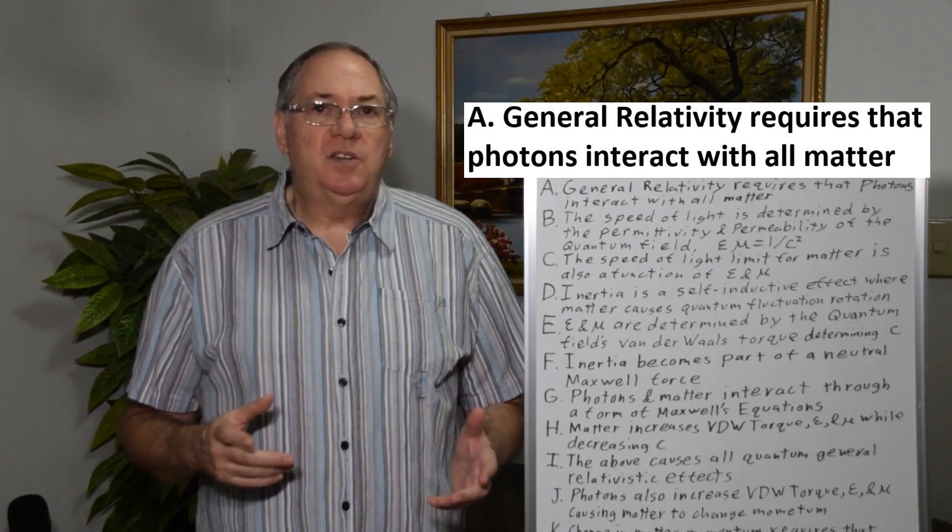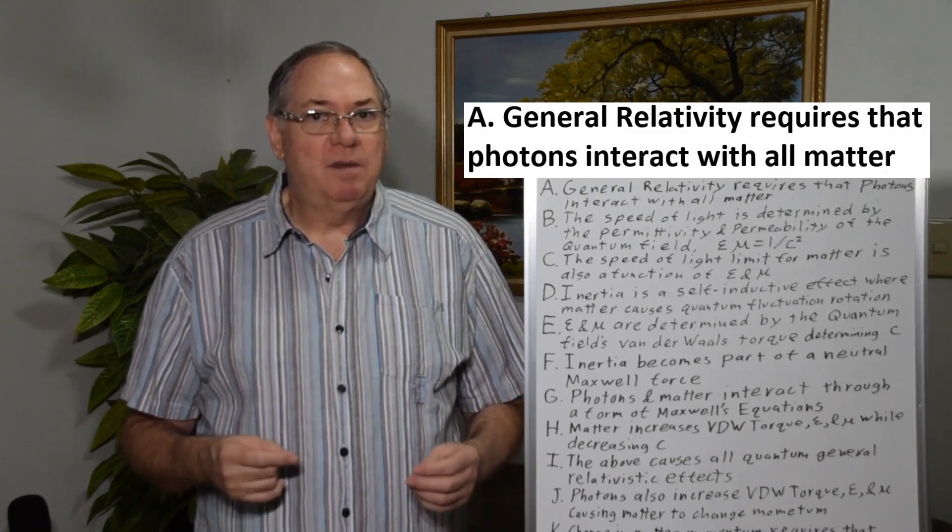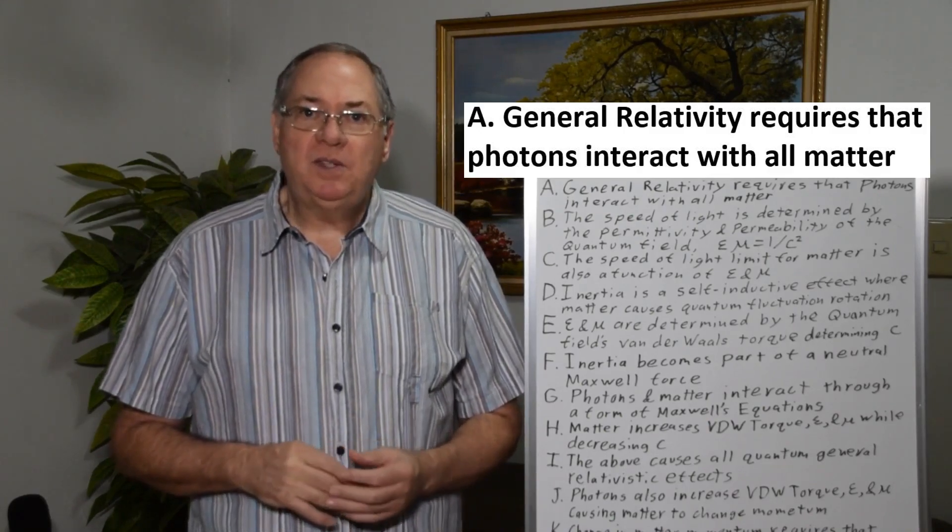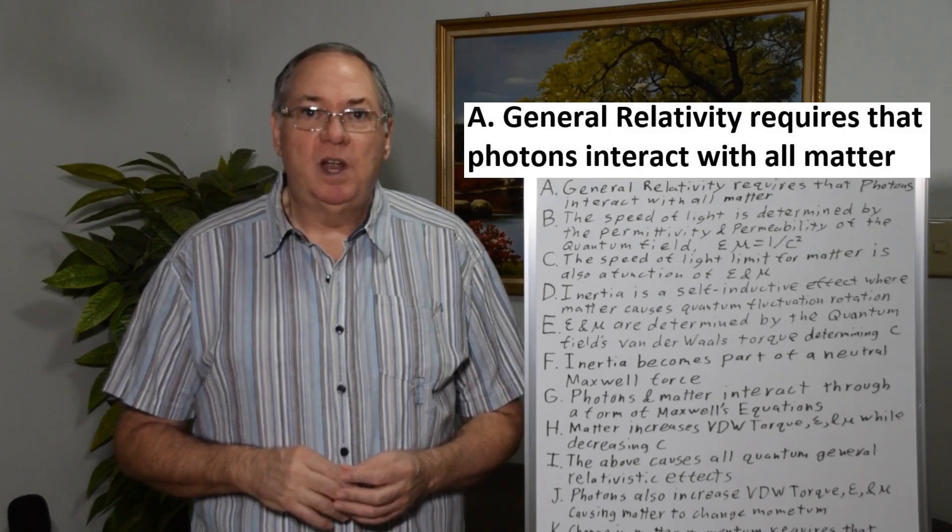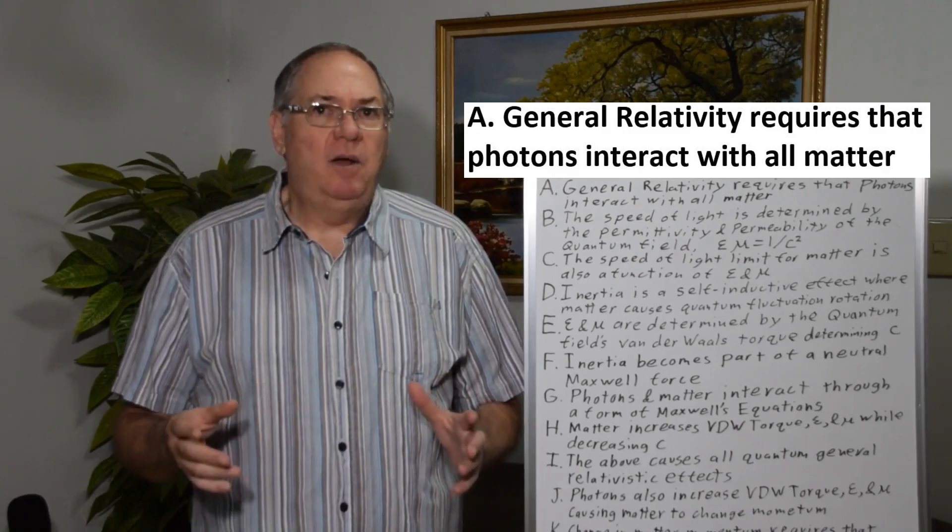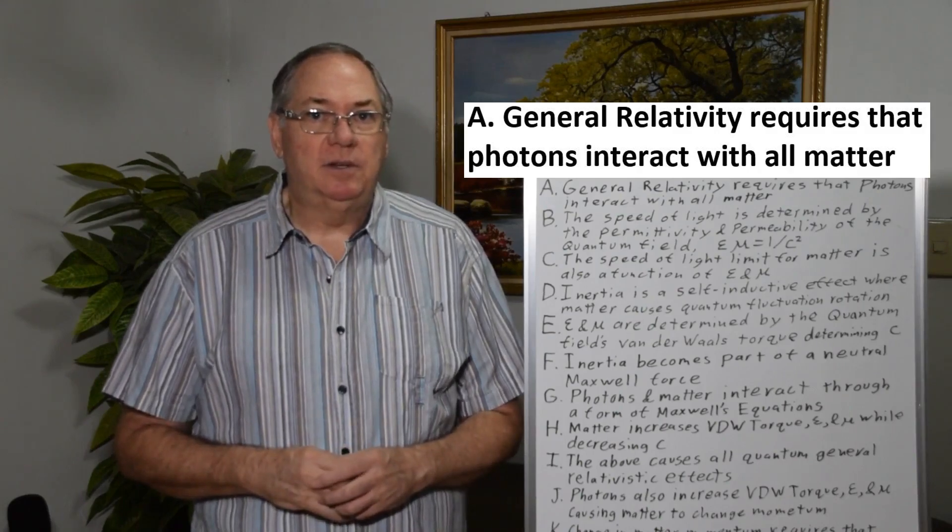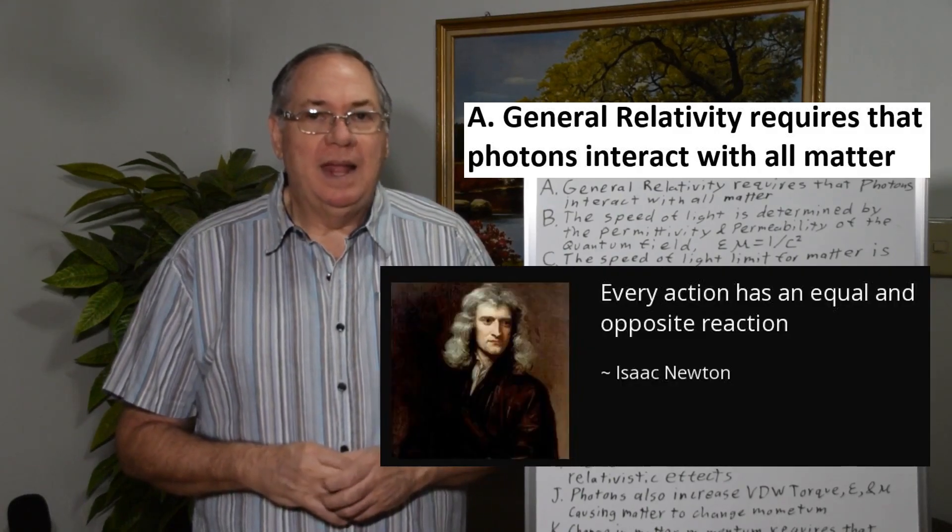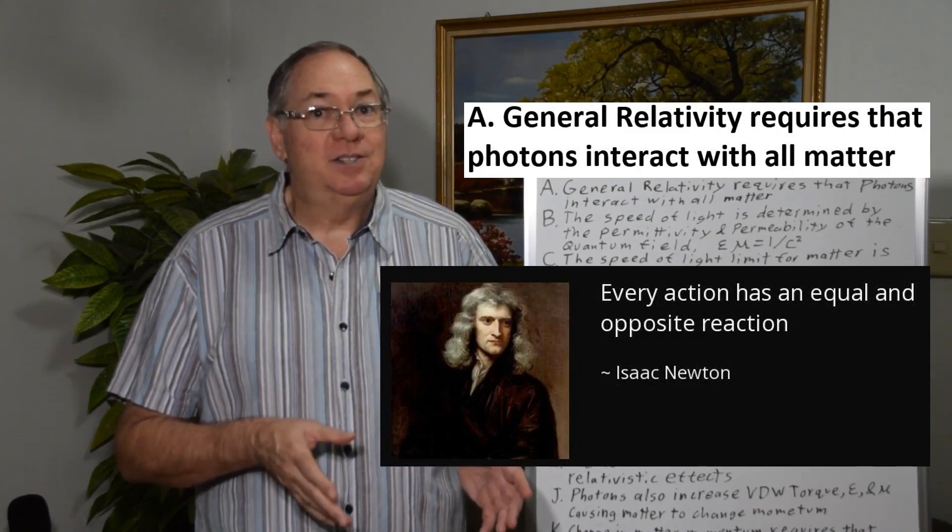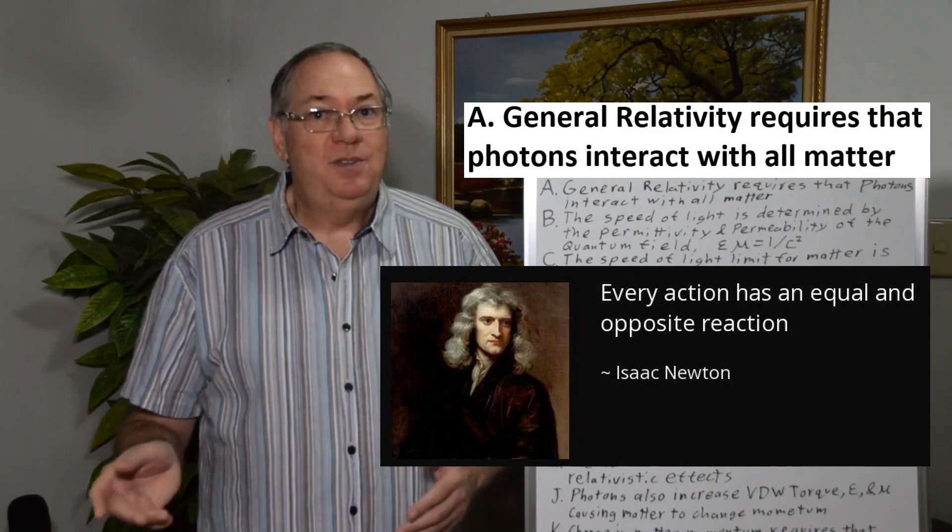But in order to understand, I'm really talking about quantum general relativity. So we have to have a model of quantum general relativity, and we also need to have a good model for inertia of the matter. Because only then can we understand how the photons and the matter are actually interacting with each other. And that tells us that not only is there an action of matter on the photon, there's a reaction where the matter reacts to the photon.